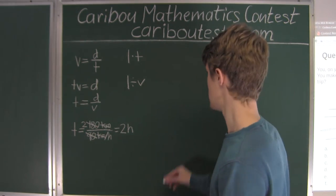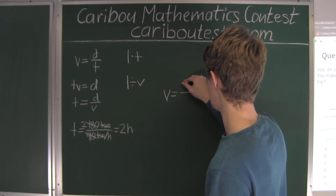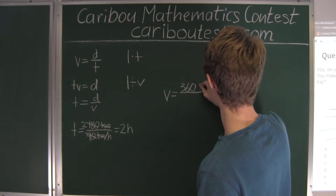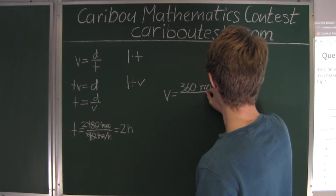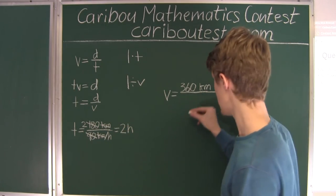So we'll have V is equal to, and then we had 2 times the 180 kilometers, which is 360 kilometers, because that's the total distance. And that is divided by the total time, which would be 2 plus 3 hours.